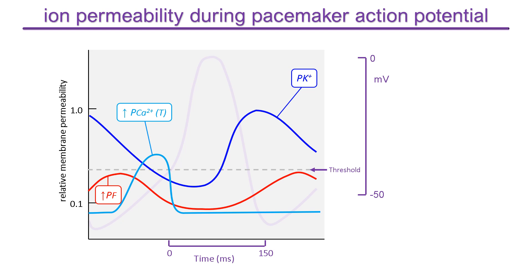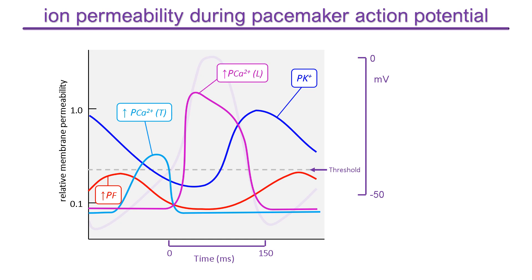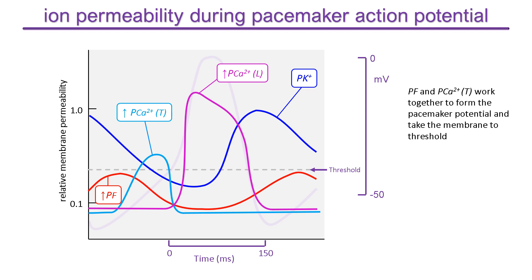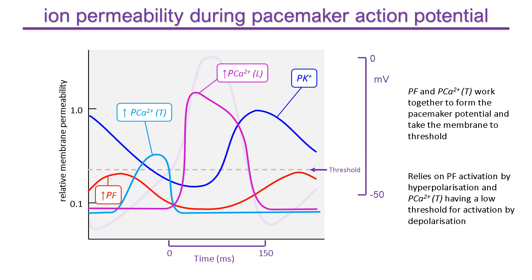The T-type calcium channel is closed and contributes little to membrane permeability throughout much of the action potential, but it opens briefly during the depolarization caused by funny channels and takes the membrane to threshold. In pacemaker cells, the action potential threshold is determined not by sodium channels but by L-type calcium channels, which give rise to an increase in calcium permeability that lasts until the repolarization phase. So the funny channels and T-type calcium channels work together to form the pacemaker potential that drives the membrane to threshold and opens L-type calcium channels. This mechanism relies on the activation of funny channels by hyperpolarization and the T-type calcium channels having a low voltage threshold for activation by depolarization.